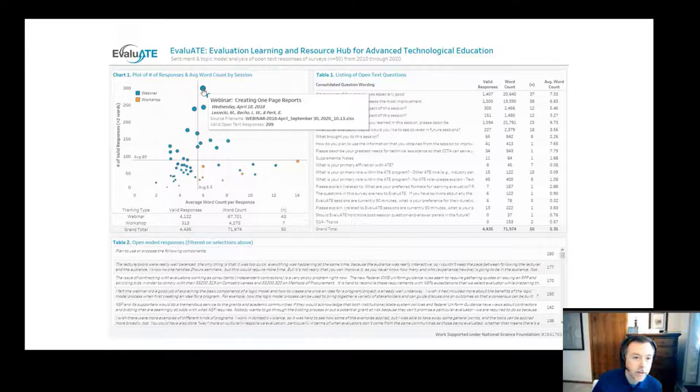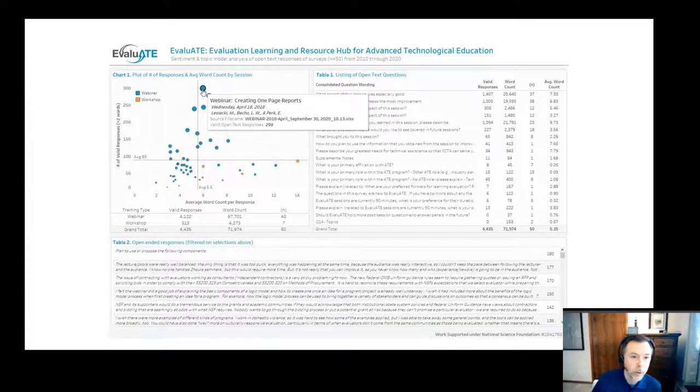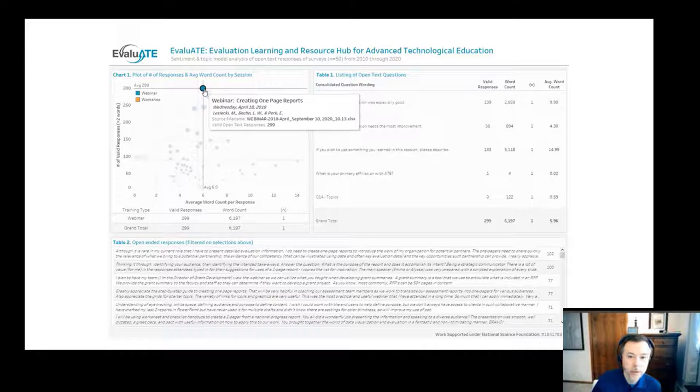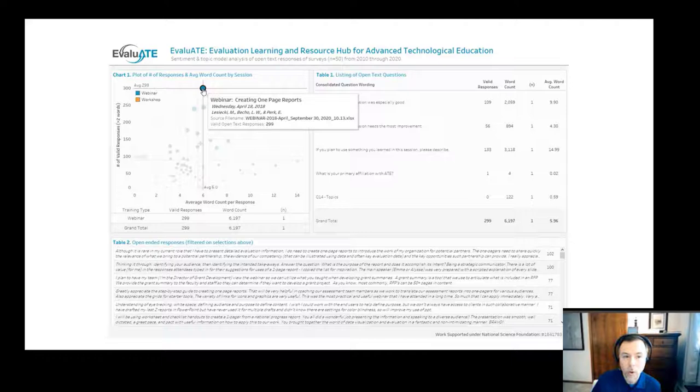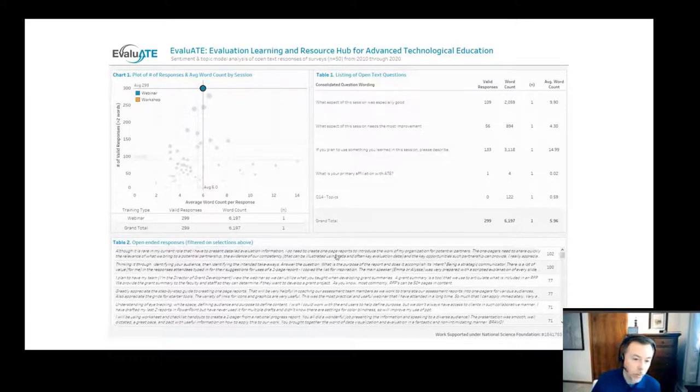It allows us, for each one of these dots, to recognize that they're a webinar or a workshop, the number of responses that we had, and the questions that were posed. By selecting any individual dot, you can see a filter that gets applied. On the right-hand side, this shows us which questions were part of that particular webinar or workshop, as well as on the bottom what the responses were in their open text.